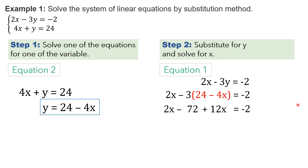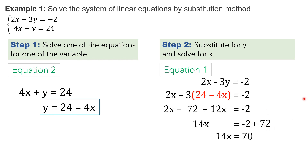Solve for x. Combine like terms — we have 2x and 12x, so 2x plus 12x gives us 14x. Bring down negative 72 and equals negative 2. Transpose negative 72 to the other side — it becomes positive 72. Combine it with negative 2: you'll have positive 70. Bring down 14x. To remove this 14, divide both sides by 14. 14 will be cancelled. 70 divided by 14 will give us positive 5. Therefore, the value for x is equal to positive 5.